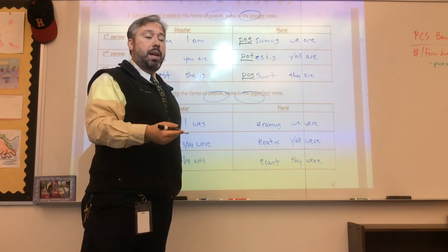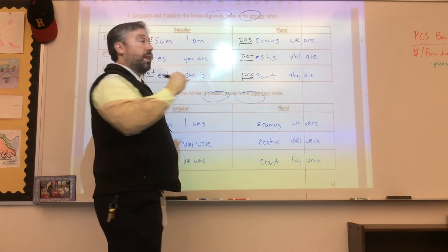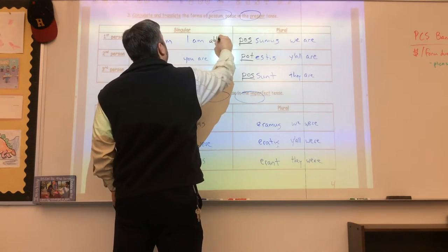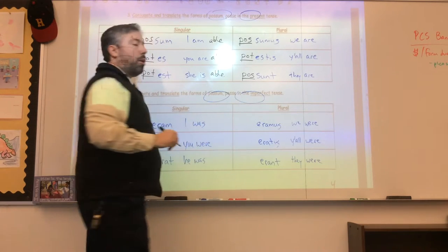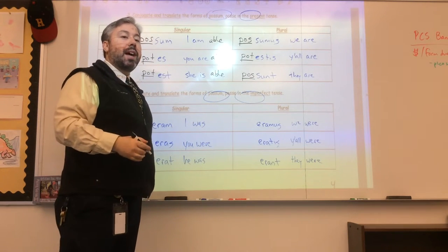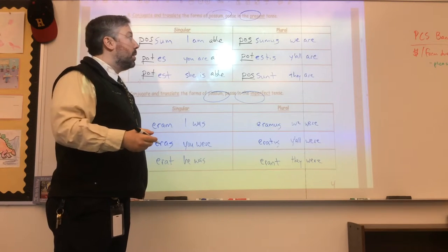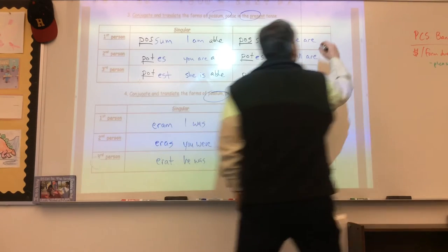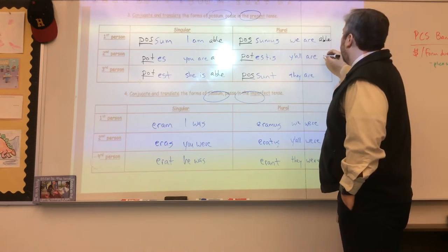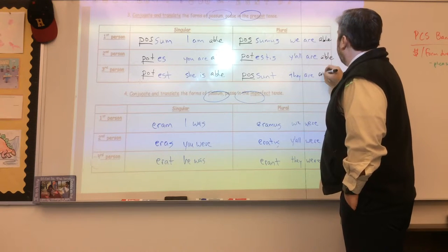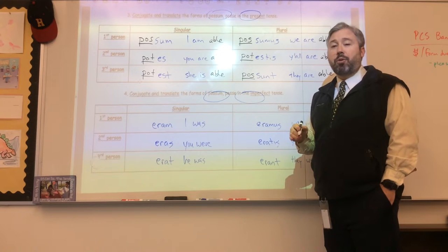So the stuff in black is what you add on to the forms. And for the translation, I am in the present tense of to be becomes I am able in the present. Therefore possum is I am able, potes is you are able, potest is he or she is able, and so on for the plurals. We get we are able, y'all are able, and they are able. That's the present tense formation.